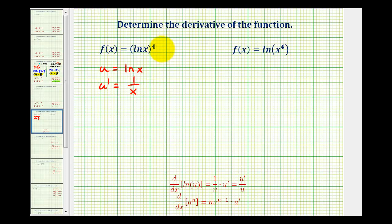So now we can think of this function as u to the fourth and apply the extended power rule. So we'd have f prime of x is equal to the derivative of u to the fourth with respect to x, that would be four times u to the third, but u is natural log x, times u prime, and u prime is one over x.